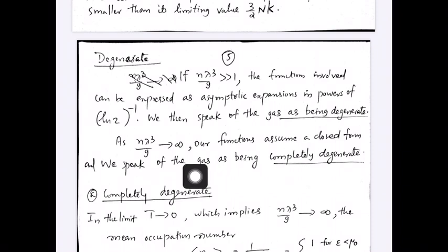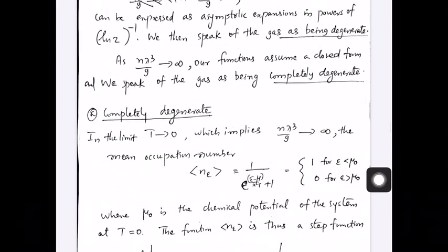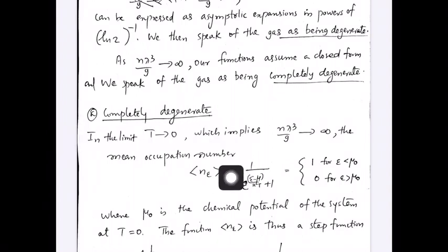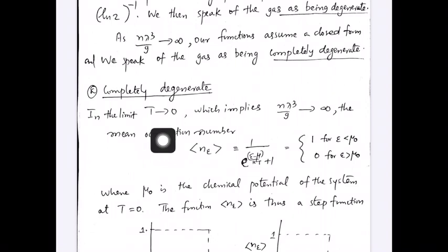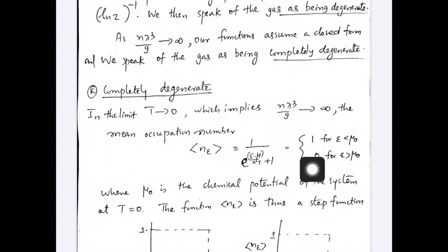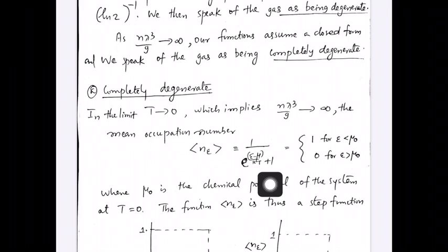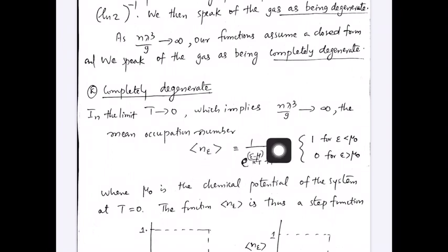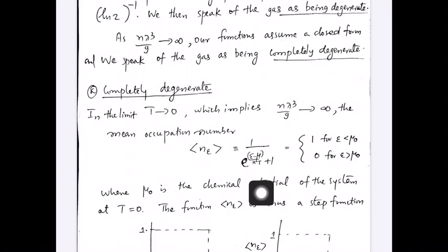As n·λ³/g tends to infinity, the gas is completely degenerate. We first consider the completely degenerate case, which happens in the limit as temperature tends to 0. As temperature tends to 0, n·λ³/g tends to infinity since λ has the temperature in the denominator. Then, what happens to the mean occupation number? If the fugacity z is written as e^(μ/kT), the mean occupation number becomes 1 / [e^((ε−μ)/kT) + 1].